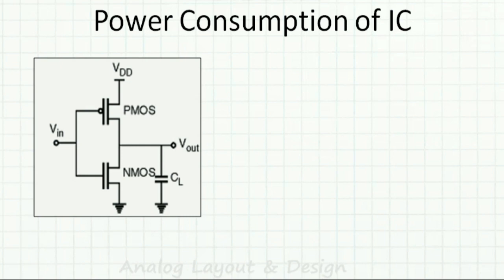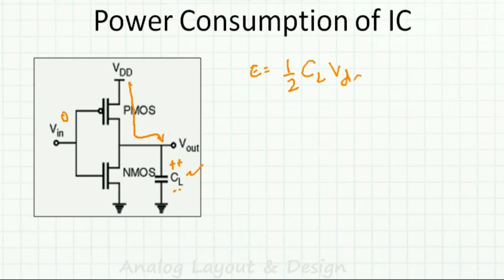Consider an inverter with CL as the load capacitor. Whenever VIN is low, the PMOS is on and current flows from VDD to CL, charging it. The energy stored in the load capacitor CL is half CL times VDD squared.